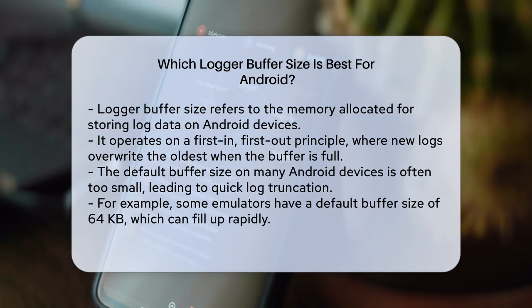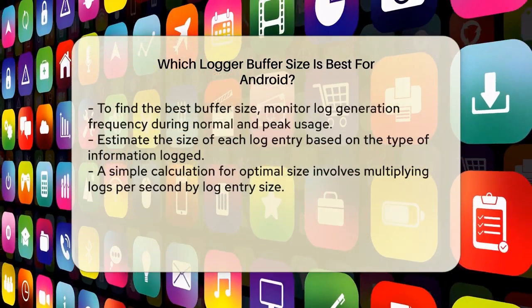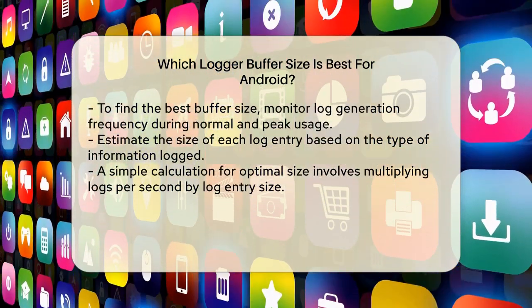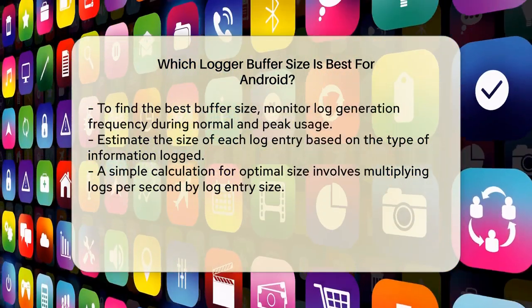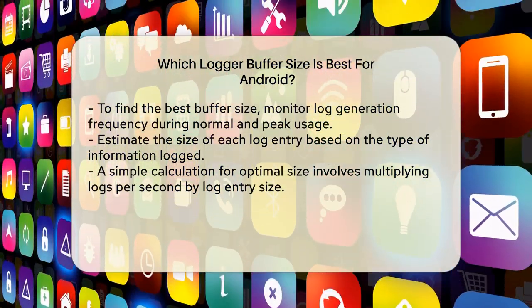On Android devices, the default logger buffer size is often too small, leading to log truncation. For instance, on some emulators, the default size is 64 kilobytes, which can result in logs being truncated very quickly.